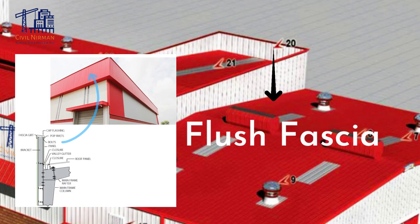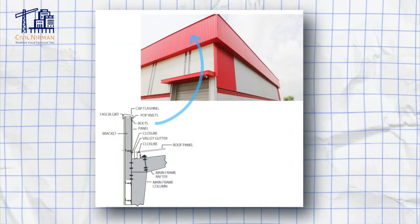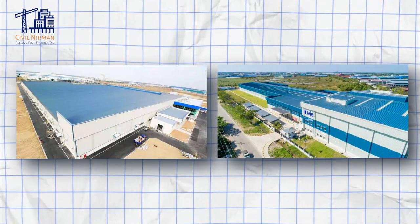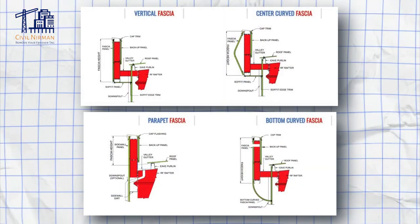On number 20 we have flush fascia. A fascia system in a pre-engineering steel building enhances the appearance and transforms it from an ordinary building structure into an attractive building. The main purpose of fascia is to conceal part or all of the cable roof. Proper color coordination of the fascia, sitting soffit, frames, gutters, and downspouts generally enhances the aesthetics of the building. There are five categories of fascia: vertical fascia, bottom curve fascia, top and bottom curve fascia, center curve fascia, and parapet fascia.